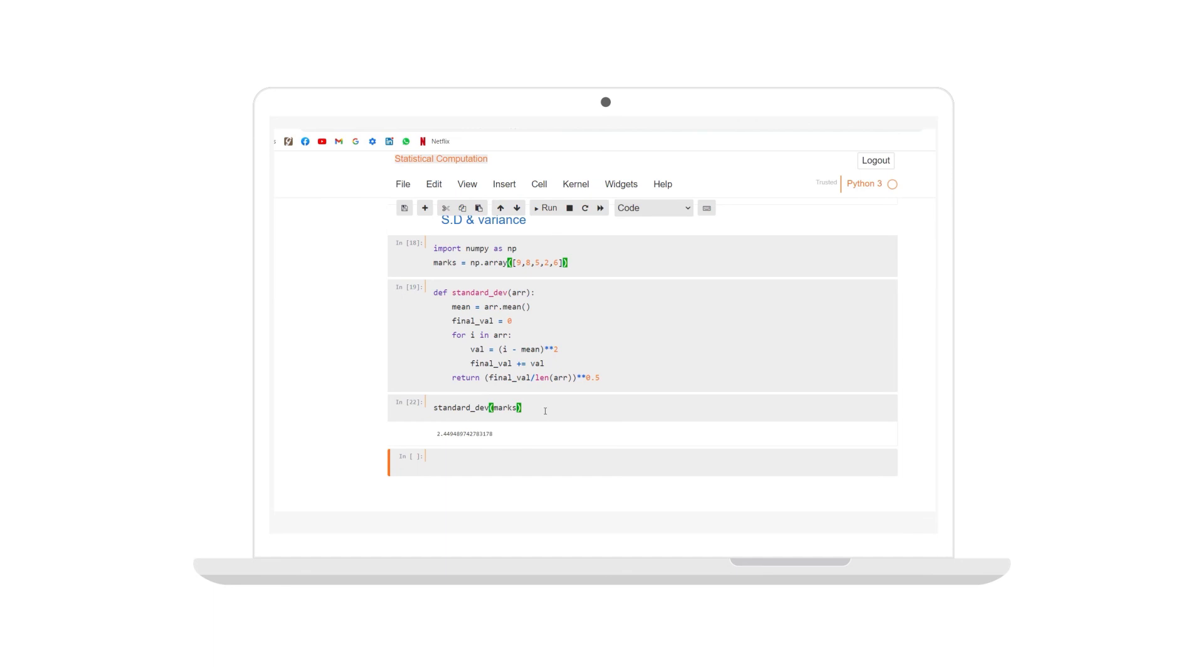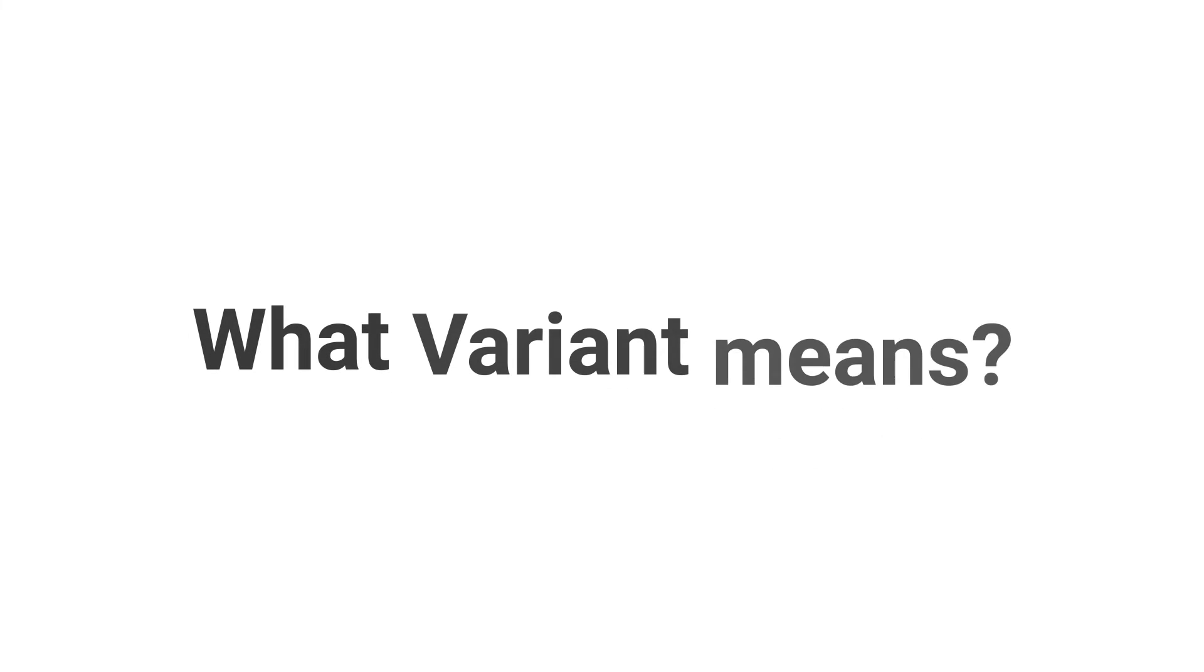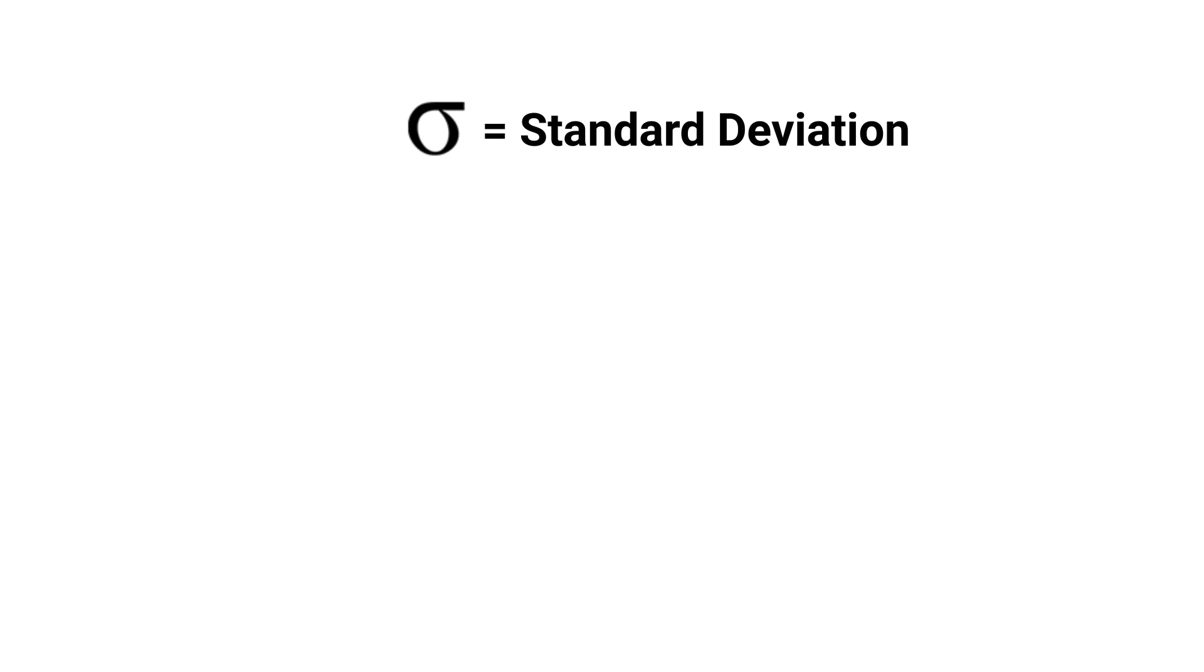Now let's come to what variance means. So standard deviation is represented by the symbol sigma. Variance is represented by the symbol sigma square. Which also means that if I have the value to standard deviation and I just square it, I will get variance. The mathematical importance of variance is not necessary right now. I just want you to know what variance means.